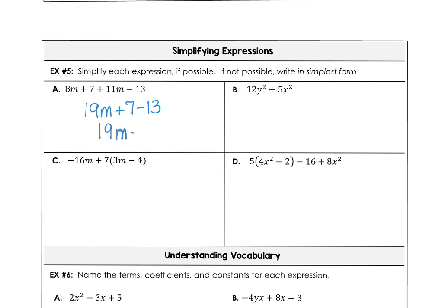And 12y squared and 5x squared. Those are not like terms, so this one is already in simplest form. It cannot be combined, because the variables are different. You can't add an x squared to a y squared.